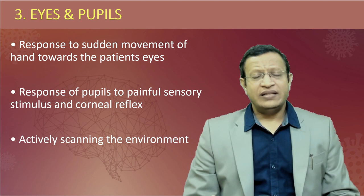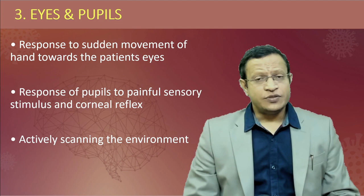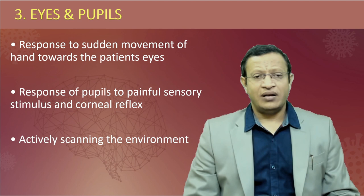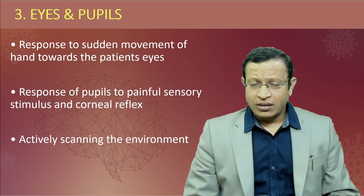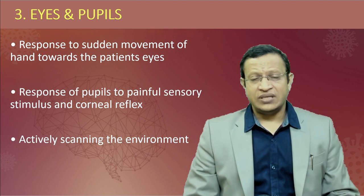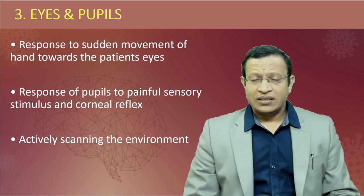Check the patient's response to sudden movements of the examiner's hand towards the patient's eyes — does the patient close the eyelids? Also check the response of pupils to painful sensory stimuli, or check corneal reflexes. Another important thing: look at whether the patient is constantly scanning the environment. Especially in schizophrenia with paranoid delusions, patients will be constantly looking here and there for the persecutory person, checking if anyone is trying to harm them.